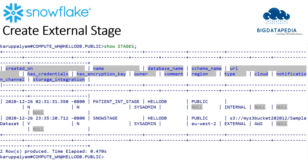Once we create the stages, we can see their properties using the SHOW STAGES command. Once I execute this command, I can see the created stage details and its types. Here, the stage name is the one we created, and it is external with cloud AWS. So this information we can collect from the stage properties.